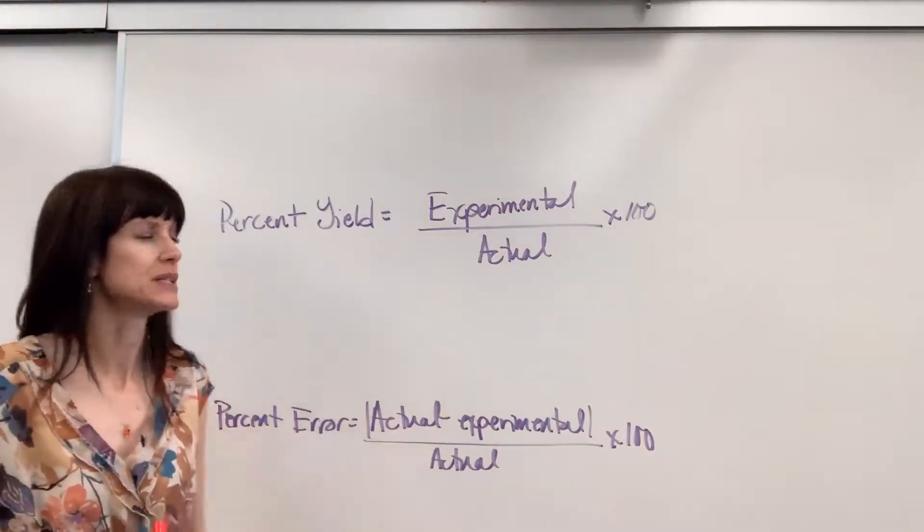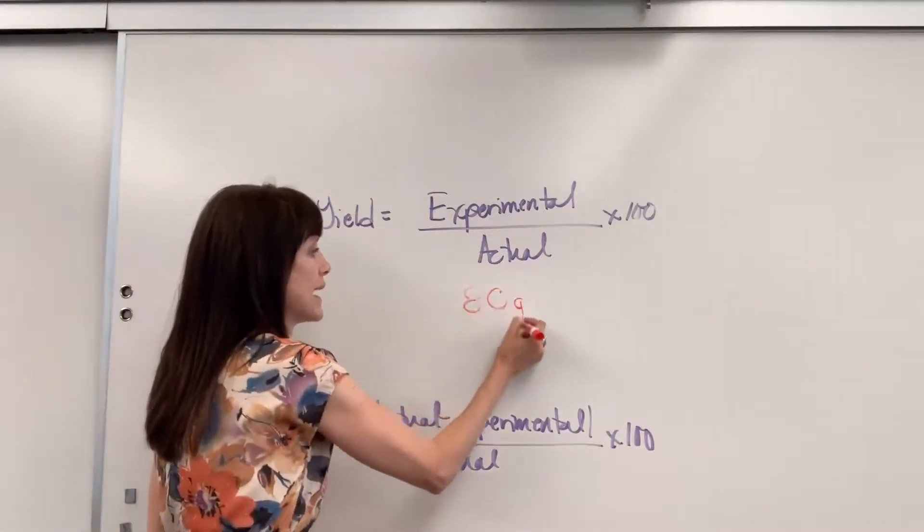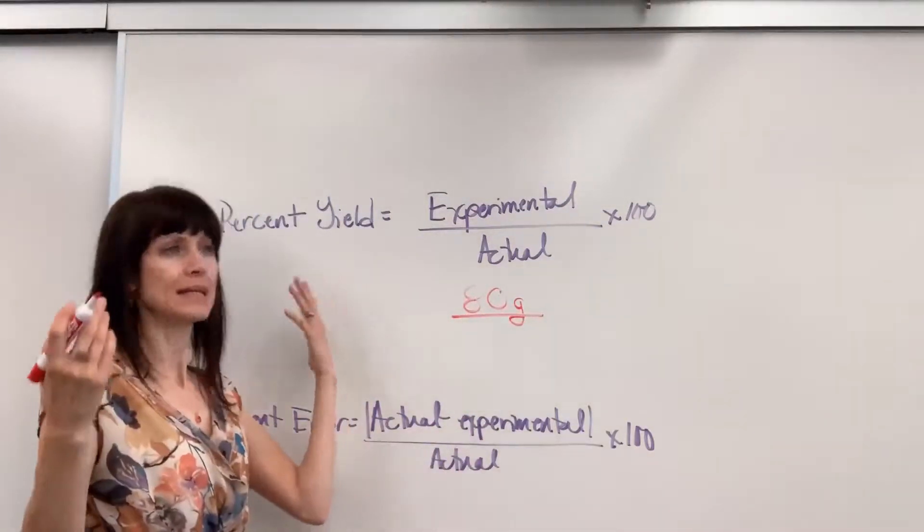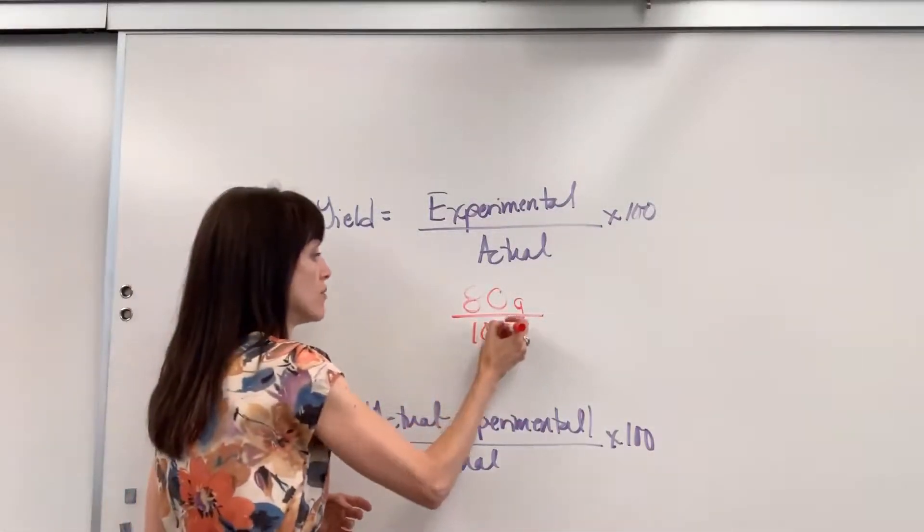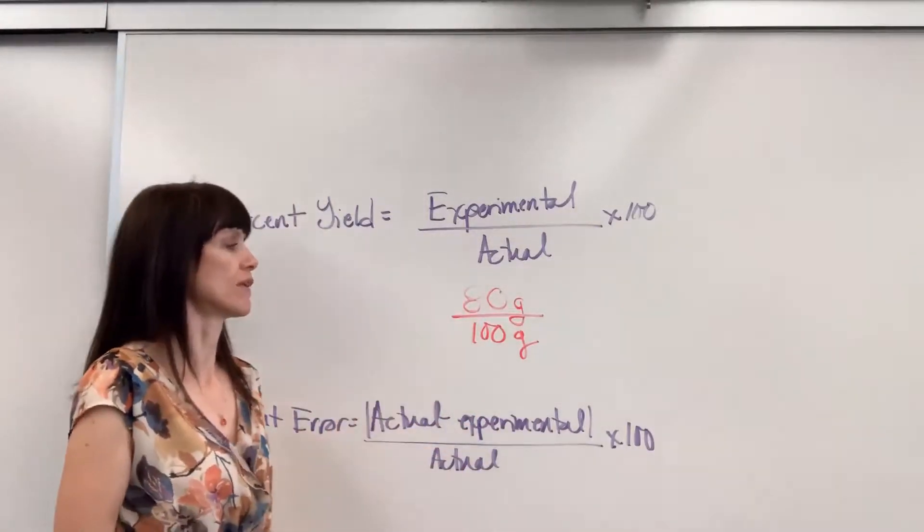Let's do just a super easy example. Let's say that you collected 80 grams of magnesium oxide, and you should have collected 100 grams. From stoichiometry, you know that you should have had 100 grams.